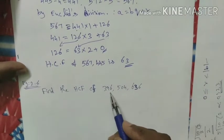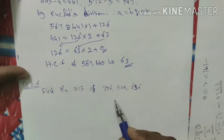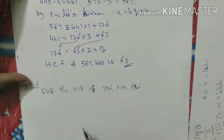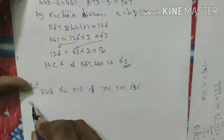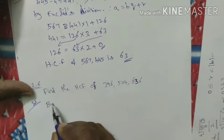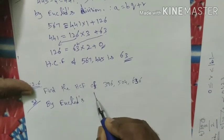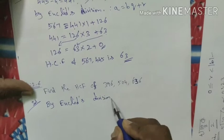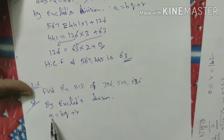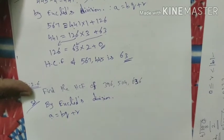Next, example sum 2.6: Find the HCF of 396, 504, and 636. This uses the long division method by Euclid's division algorithm. The formula is a equals bq plus r, where dividend equals divisor into quotient plus remainder, and the remainder is always a positive value.